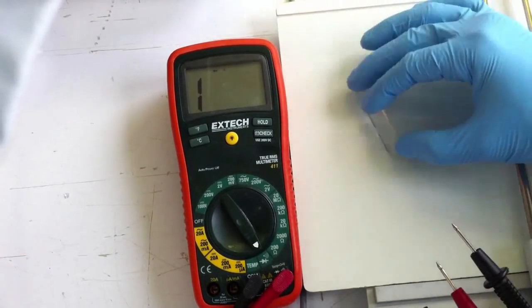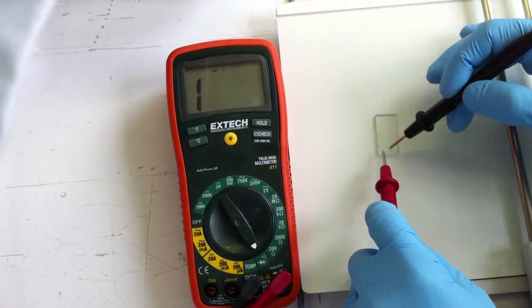The back side is insulating, while the working side is conductive, as indicated by the multimeter.